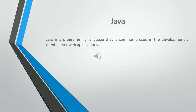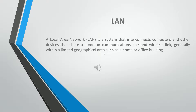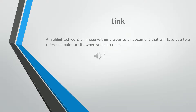Java is a programming language that is commonly used in the development of client-server web applications. JPEG — Joint Photographic Experts Group — is an image file format that tends to be used for full-color scanned photographs shown on websites. The Local Area Network (LAN) is a system that interconnects computers and other devices that share a common communications line and wireless link, generally within a limited geographical area such as a home or office building. A link is the highlighted word or image within a website or document that will take you to a reference point or site when you click on it.